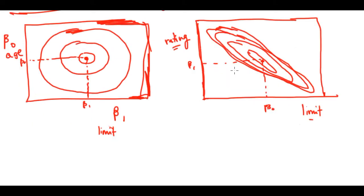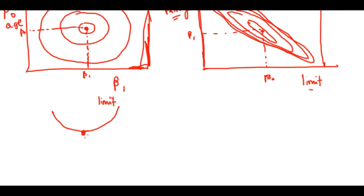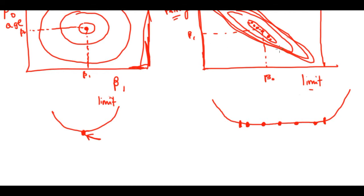When predictors are related, the contours are squashed and run along a valley. There is a broad range of values for the coefficients that result in the lowest RSS. Unlike the non-collinear case with a single point at the bottom of the trough, here we have a valley, meaning many combinations of beta naught and beta one can produce equally low RSS values.